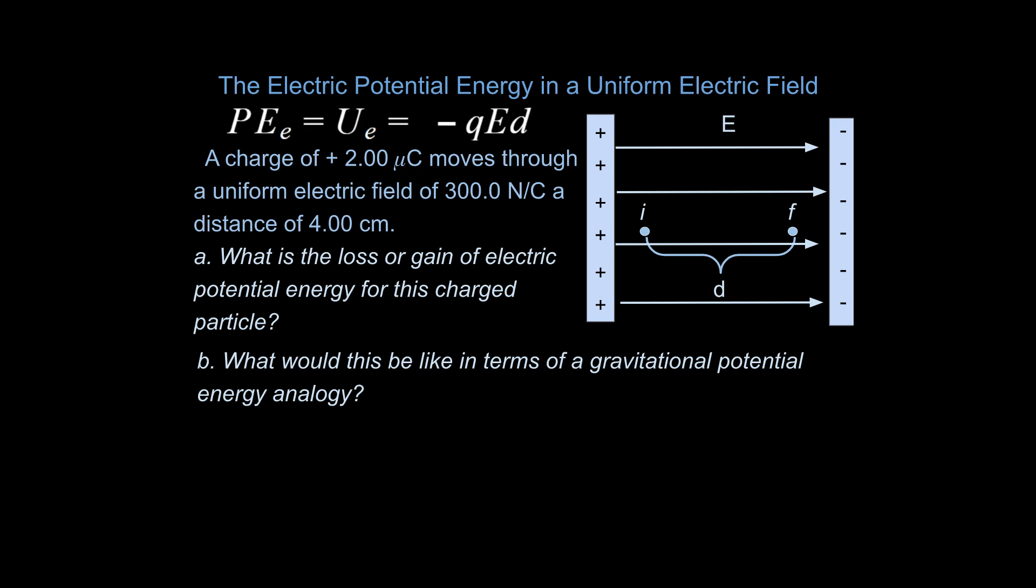So let's take a look at a problem. It says a charge of two micro coulombs moves through a uniform electric field of 300 newtons per coulomb a distance of four centimeters. What is the loss or gain of electric potential energy for this charged particle? And what would this be like in terms of the gravitational potential energy analogy?